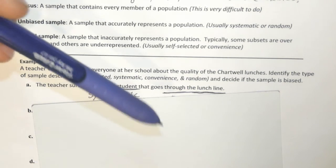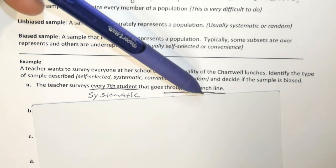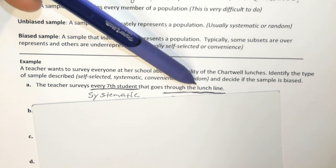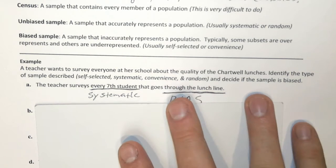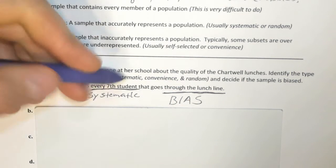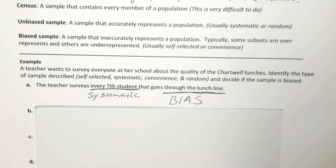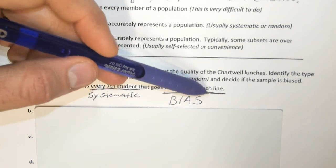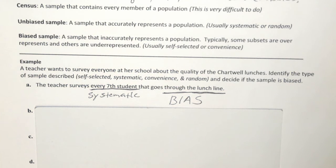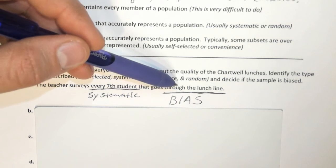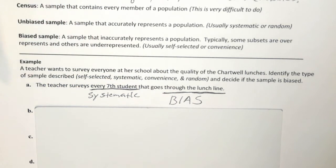Every seventh student means she's using a pattern, so this is systematic. But the bad news is that the system relied heavily on students being lined up to buy lunch, which makes this sample very biased. If students are lined up to buy lunch, they probably think the cafeteria lunches are okay or even great. If you feel passionately that they're awful, you're probably not in line — so you'll be underrepresented.